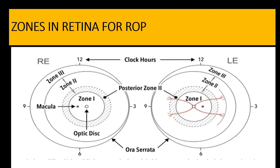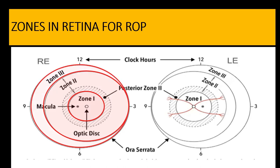The ICROP group divided the retina into three main zones for defining retinopathy of prematurity: zone 1, zone 2, and zone 3. Zone 2 is further divided into zone 2 anterior and zone 2 posterior. Zone 2 posterior is a two disc diameter area around the edge of zone 1, labeled in green color in this diagram.